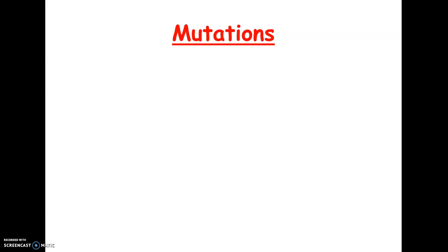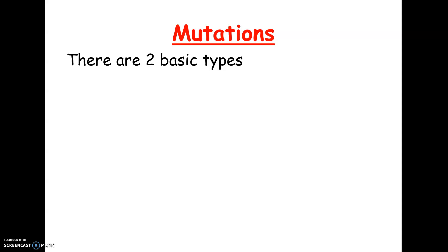This last section is about mutations — what happens if the DNA code gets changed. We're going to talk about two basic types of mutations, even though we've already talked about chromosome mutations, like a deletion of a section of a chromosome or a missing chromosome. This is different. Here we're talking about what's called a point mutation — just changing one letter of a code, not changing an entire chromosome or a big section of a chromosome.